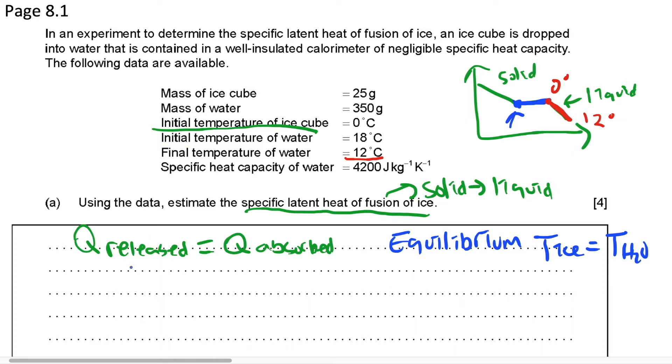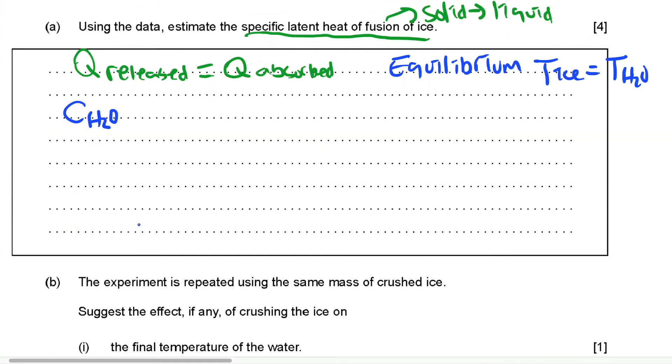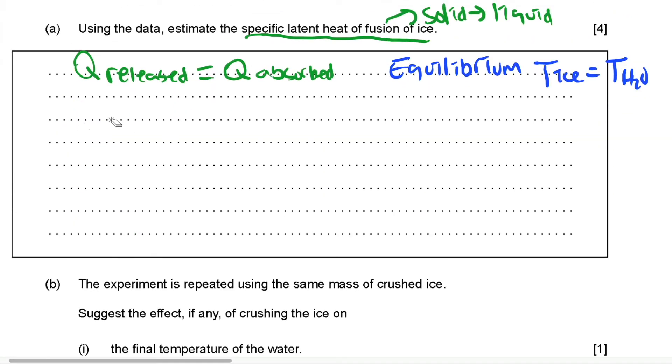We know the water is going to release energy. So heat capacity of water multiplied by mass. So let me write this down. Energy released is equal to energy absorbed.